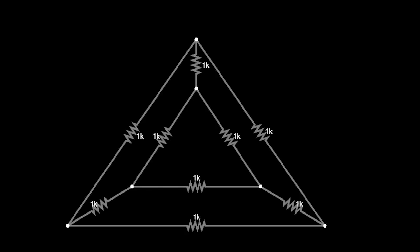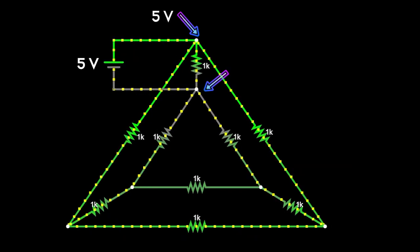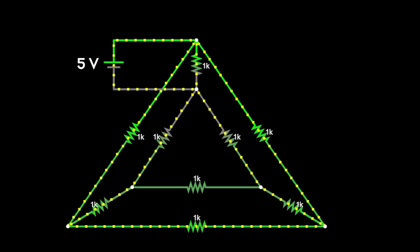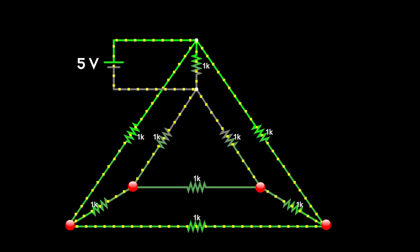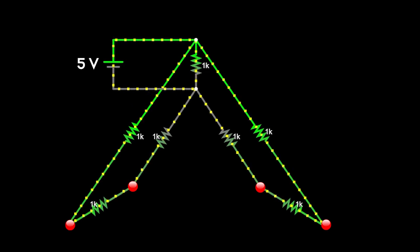Now one last example. Here too we make the same analysis - this point will be at 5 volts and this at 0 volts. The incoming current of say 4 amperes will split as 1 ampere, 2 amperes, and 1 ampere. Currents will be the same in the two symmetric parts, giving equal voltage drops, so we get our equipotential points. Likewise, equal drops across these two resistors make those two points equipotential as well. Since no current can flow through these two resistors, we just remove them. The whole circuit is now very much simplified and we can easily find the equivalent resistance or voltage at any node.